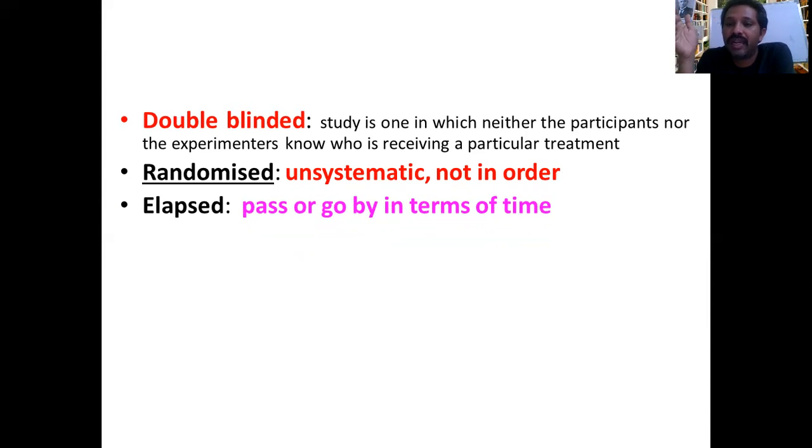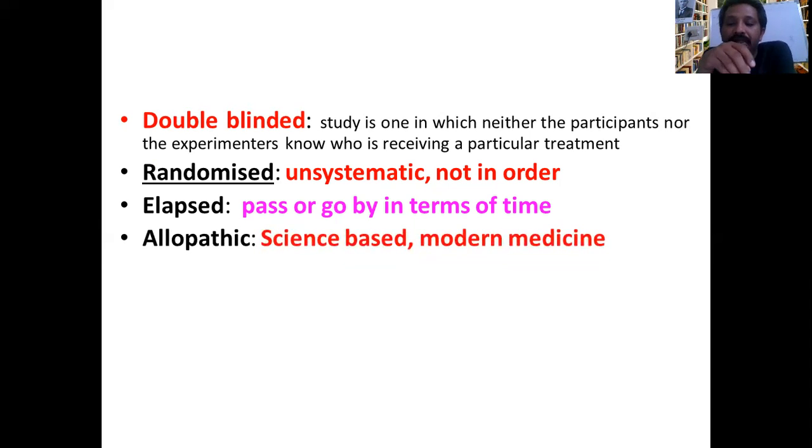Elapsed means time passed. How many days elapsed before giving this drug? Means time passed. How many days elapsed before coming to me? So what is the time passed or go by in terms of time? In terms of time, if it is passed, that's what's elapsed. Allopathic is modern medicine based upon science. So there would be a particular study. That study will tell you the efficacy, safety, and immunogenicity. That is what is called as allopathy. Means science-based, systematic studies are there. It is not that Ayurvedic or homeopathy.